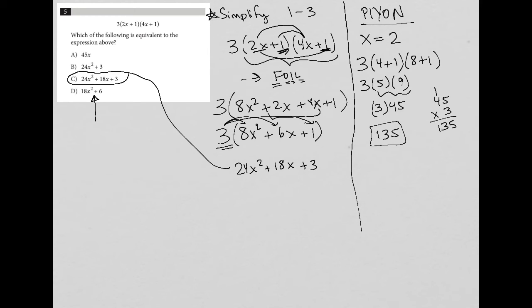So that's step one for plugging your own number. The next step is to then try the answer choices, plugging in the same number that you plugged into the question to see which one of those choices matches this 135 that we got. So choice A would be 45 times two, that is not equal to 135. So that's gone.